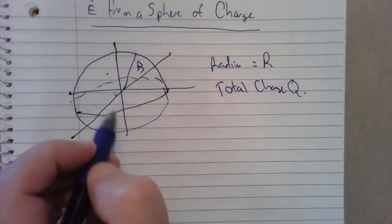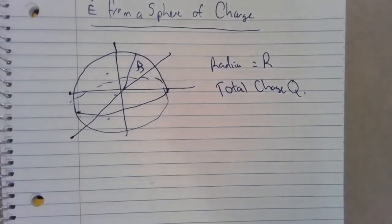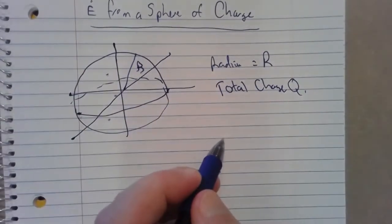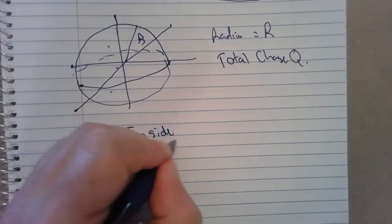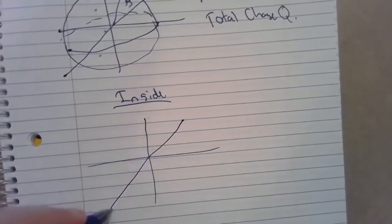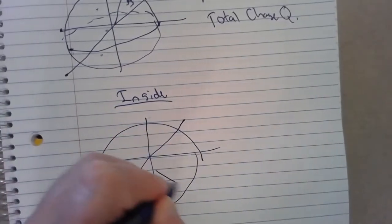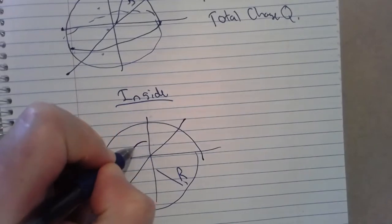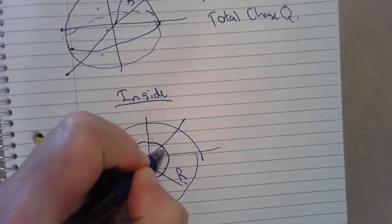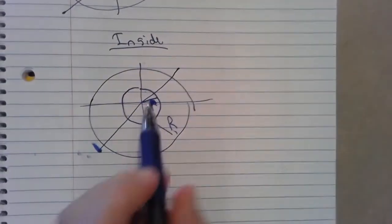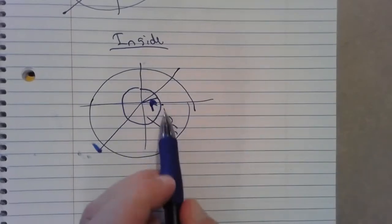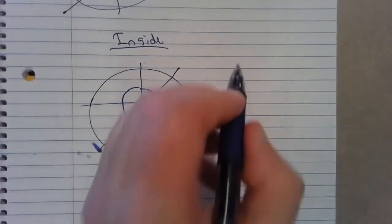I'm going to find the electric field inside the sphere — literally inside the material — and some distance outside the sphere. So we're going to start inside. Let me redraw my picture here. Here's the sphere; I'm out at capital R. I'm going to be some radius little r away from the origin, and I'll find the electric field inside the sphere at little r.